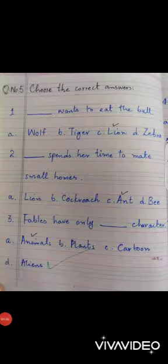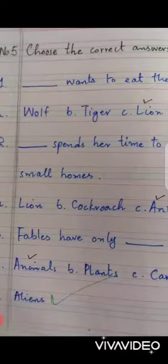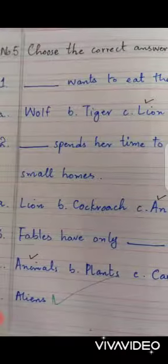Assalamualaikum students, hope you all are fine and having a good time. Today we will do page number five, choose the correct answer. Number one: blank wants to eat the bull. Options: wolf, tiger, lion, zebra. Correct option is lion.